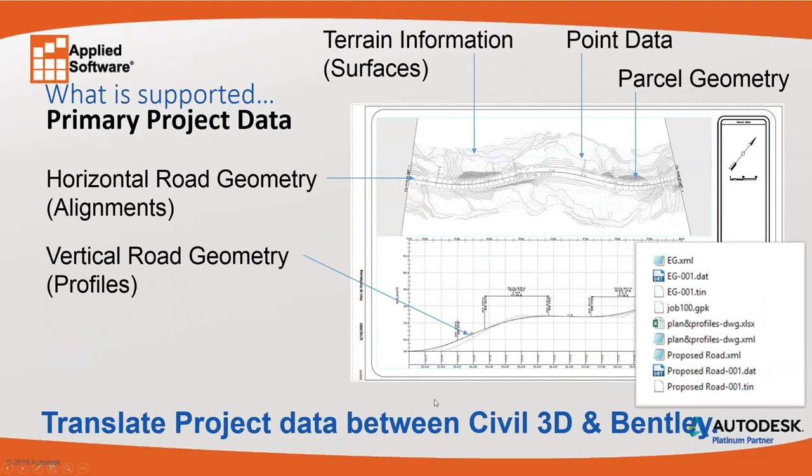So what is supported? Terrain information, TIN surfaces, point data, parcel geometry, horizontal control in terms of roadway alignments, and vertical control in terms of profiles. When the data is exported out, an XML file is created, a TIN file is created, a GPK project file is created, and also a spreadsheet — enabling translation of project data between Civil 3D and Bentley.